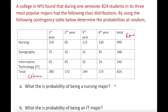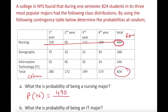The first question asks: what is the probability of being a nursing major? Using the fundamental counting principle, the probability of nursing equals the nursing total divided by the overall total — that is, 490 over 824. The denominator is always the total number of outcomes, which in this case is 824.